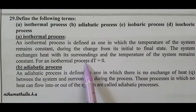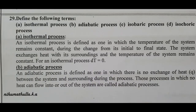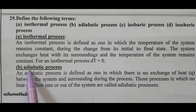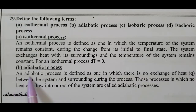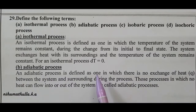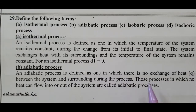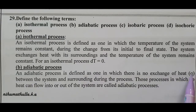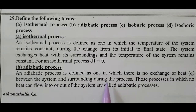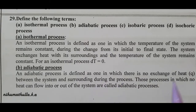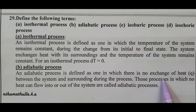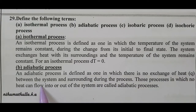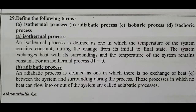Adiabatic process: heat is constant (no heat exchange). An adiabatic process is defined as one in which there is no exchange of heat — quantity of heat Q — between the system and the surroundings during the process. Those processes in which no heat can flow into or out of the system are called adiabatic processes. Delta Q equals zero.